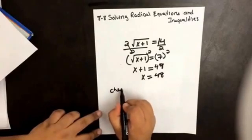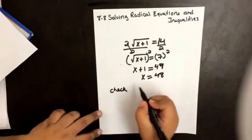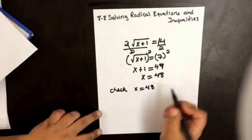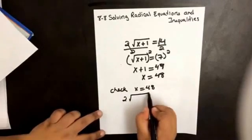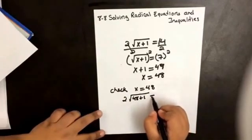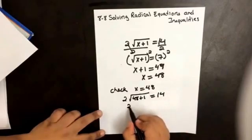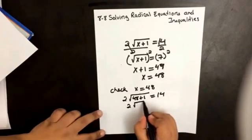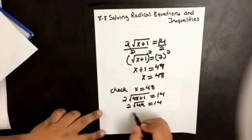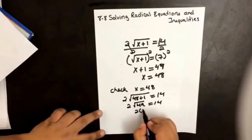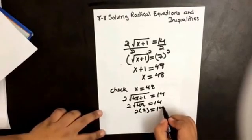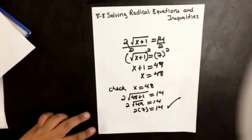And we want to go back and check. We said that x was equal to 48, so 2 times the square root of 48 plus 1 equals 14. That gives us 2 times the square root of 49 equals 14. The square root of 49 is 7, so 2 times 7 equals 14. So that's true.